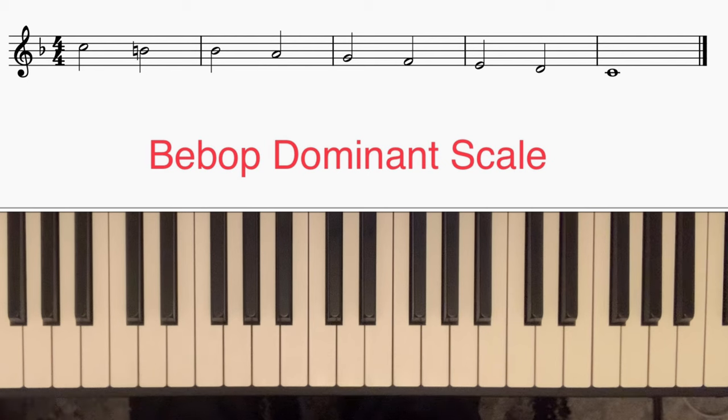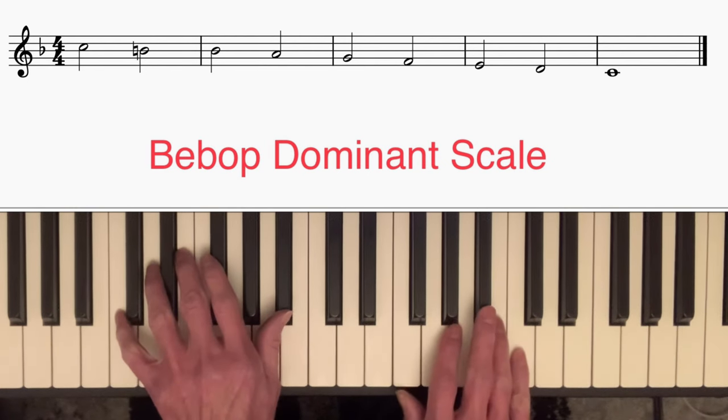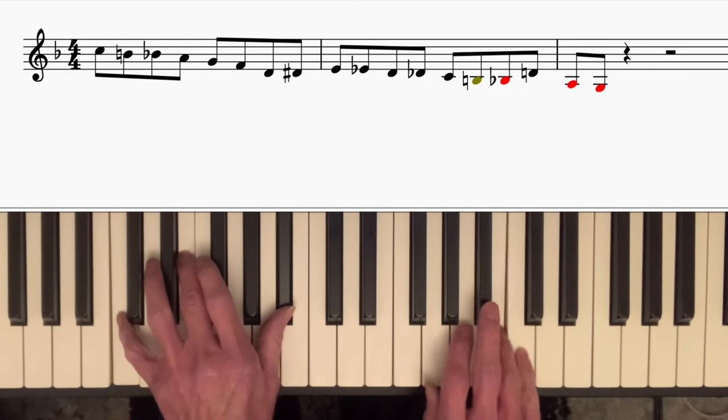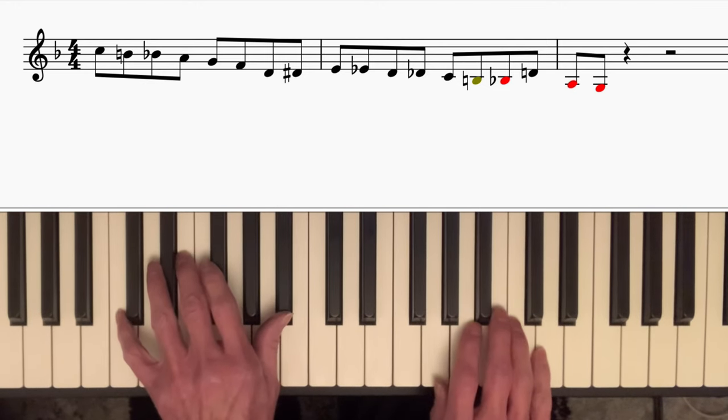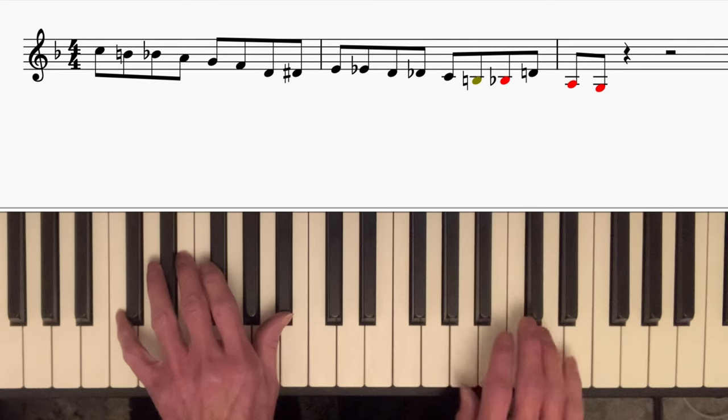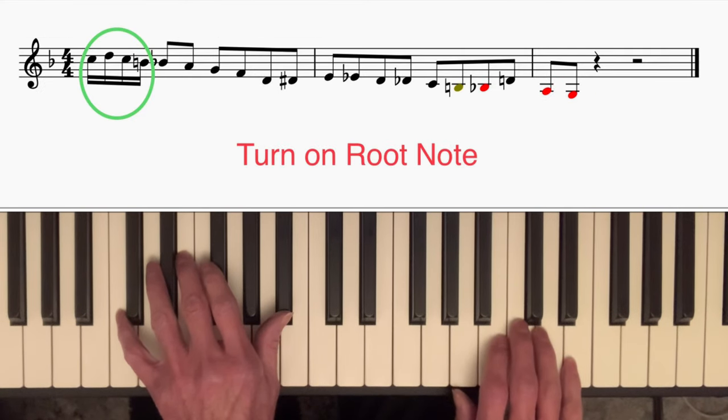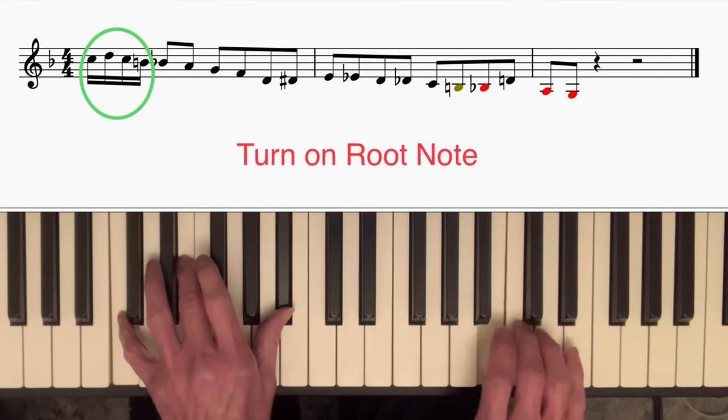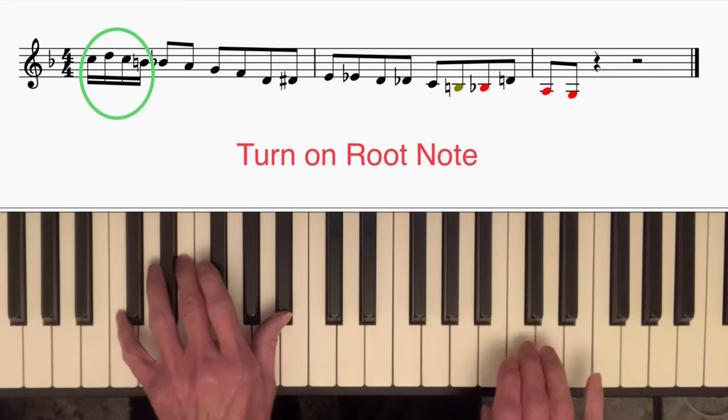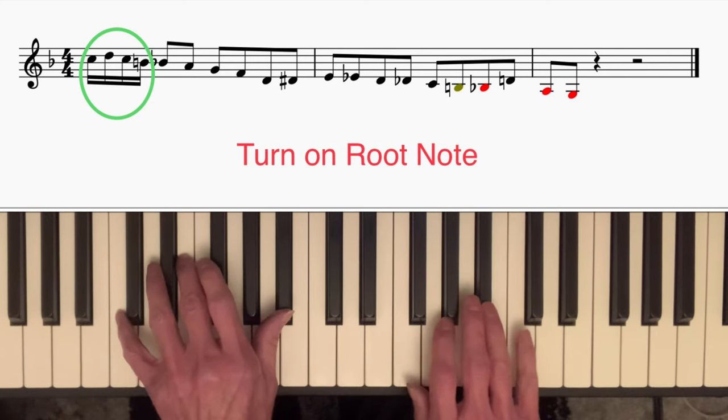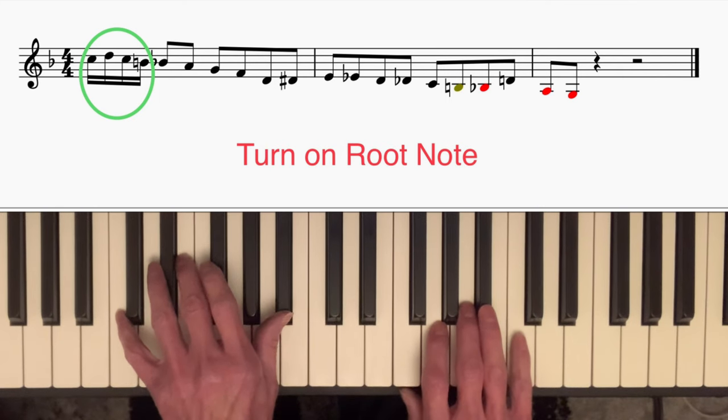So in the first example, I started off with a descending bebop scale. And then I put a 16th note turn on the C, the root note. So you play the C, then you go one step above, come back to the C, then to the B, and that way you maintain this line of chord notes falling on the downbeats.